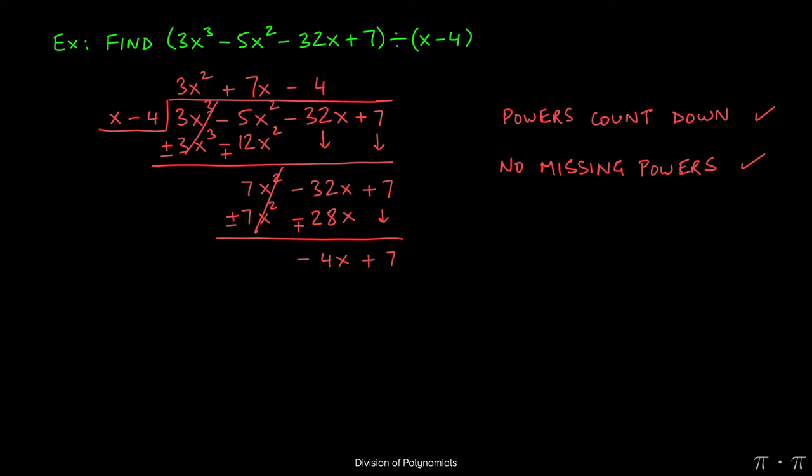Then we multiply that by both terms on the outside. So negative 4 times x will give us a negative 4x, and negative 4 times negative 4 will give us a 16. Now 16 has to be written underneath the other number that we have.